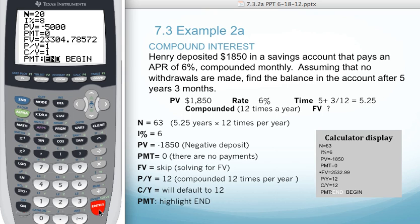To determine N, we want to take the number of years, which is 5.25, times the number of compounding periods, which in this case is 12. We can hit the down arrow. In this case, it gives us our 63.